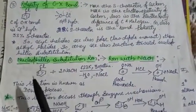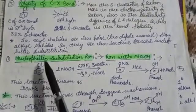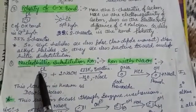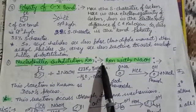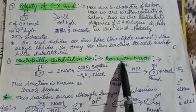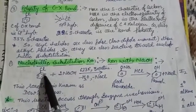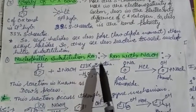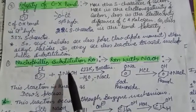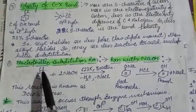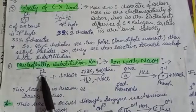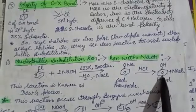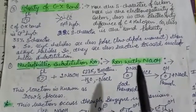Aryl halide, like alkyl halide, undergoes nucleophilic substitution reaction. We will study the reaction with NaOH. For aryl halide, that is chlorobenzene, when NaOH is added at high temperature and pressure - 603 Kelvin temperature and 300 atmosphere pressure - NaCl will form and OH will go in, so phenol will form. If you do this directly, NaCl will go and OH will come in, then phenol will form.